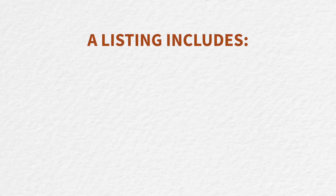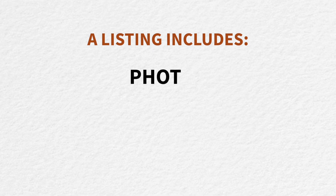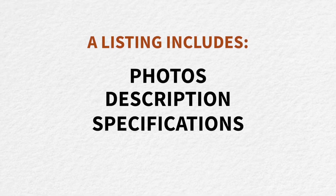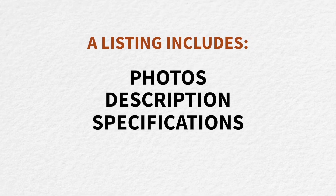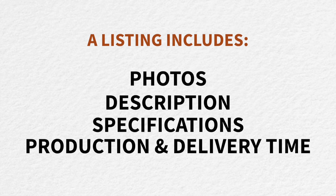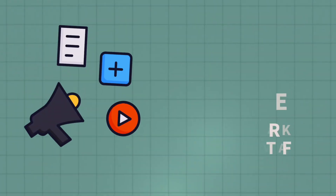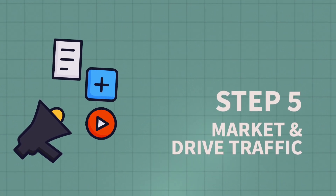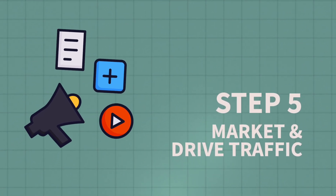A listing typically includes photos, a description, product specifications, estimated production and delivery time, and anything else your customer would need to know. Once your listings are created and your shop is ready to publish, you move on to step number five: market and drive traffic.